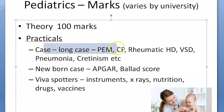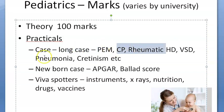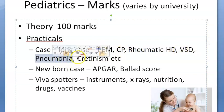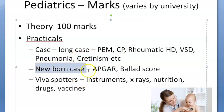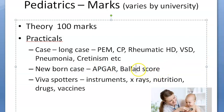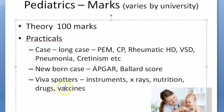For practicals, any clinical case could be presented: protein energy malnutrition, cerebral palsy, rheumatic heart disease, ventricular septal defect, pneumonia, cretinism (congenital hypothyroidism), etc. One newborn case will be there — you need to know the Apgar score and Ballard score, basically for determining prematurity.